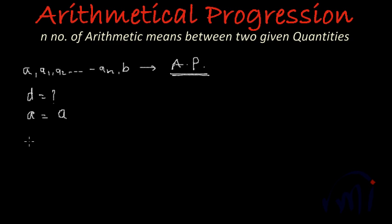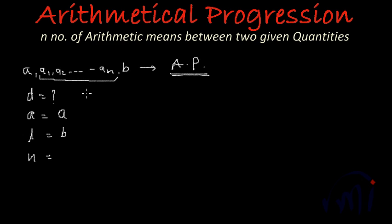We are provided with the first term as a, the last term as b, and n — the number of arithmetic means. What is the total number of terms? If we are inserting n arithmetic means between a and b, then the total number of terms becomes n plus 2. Let's call this total number of terms n1 and the first term a1, just to differentiate.